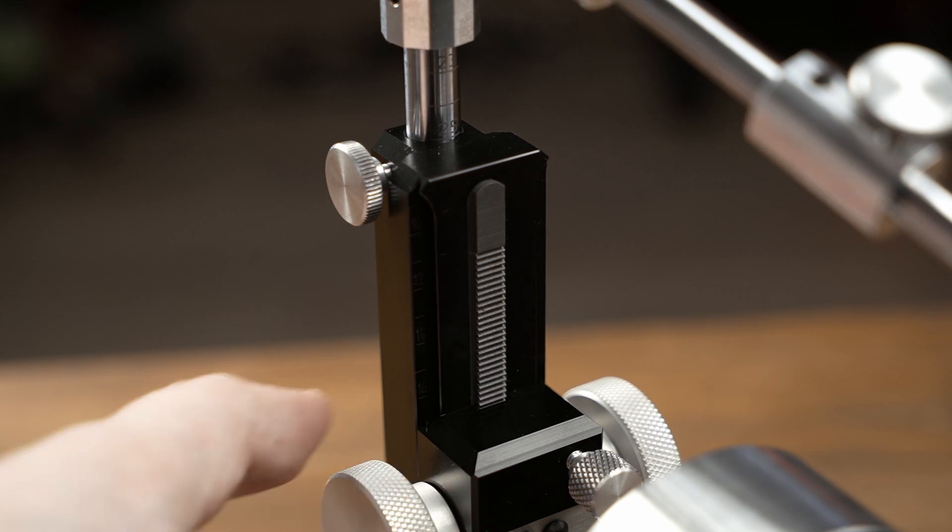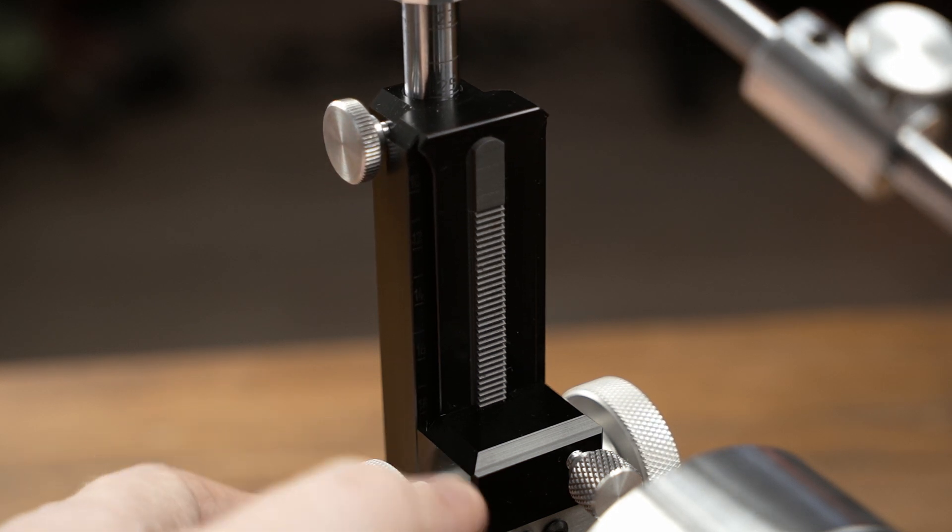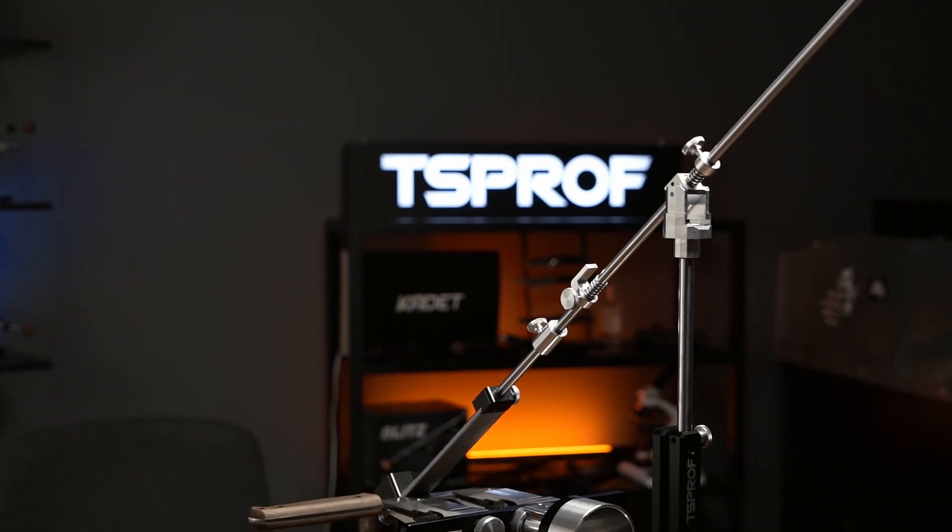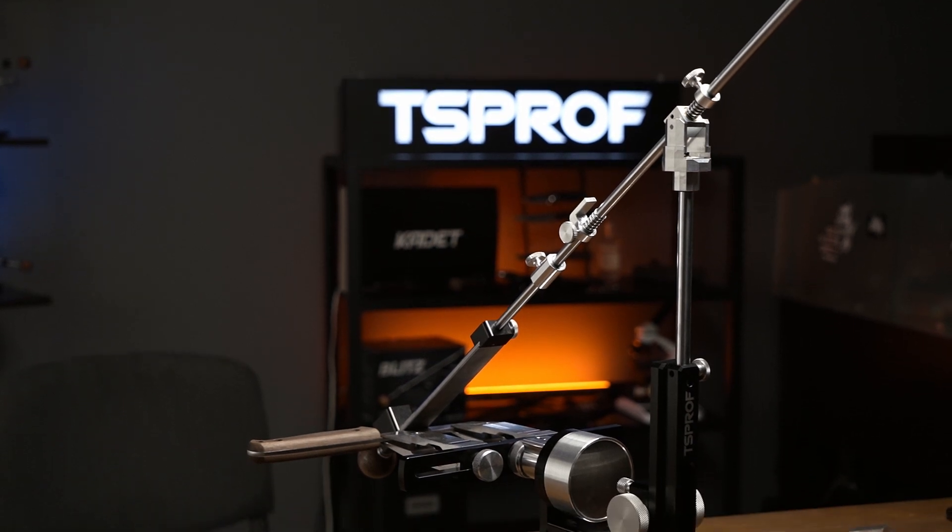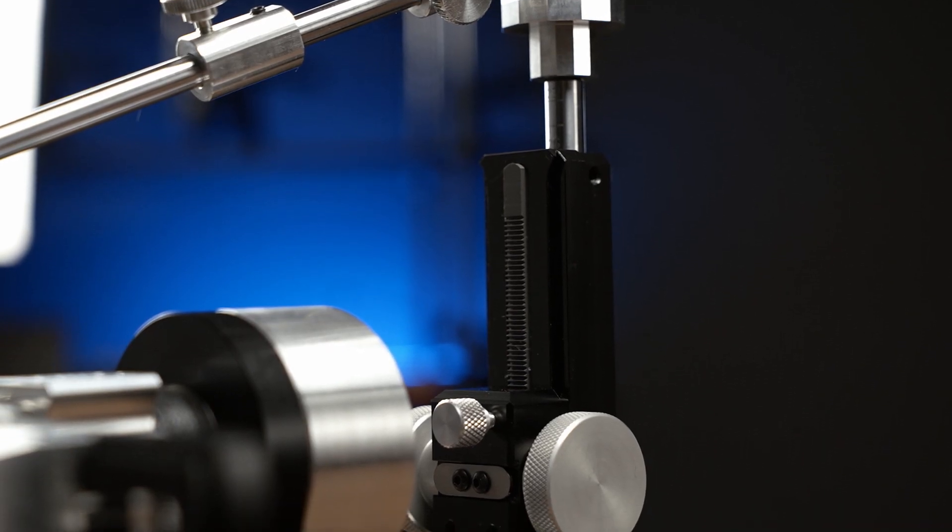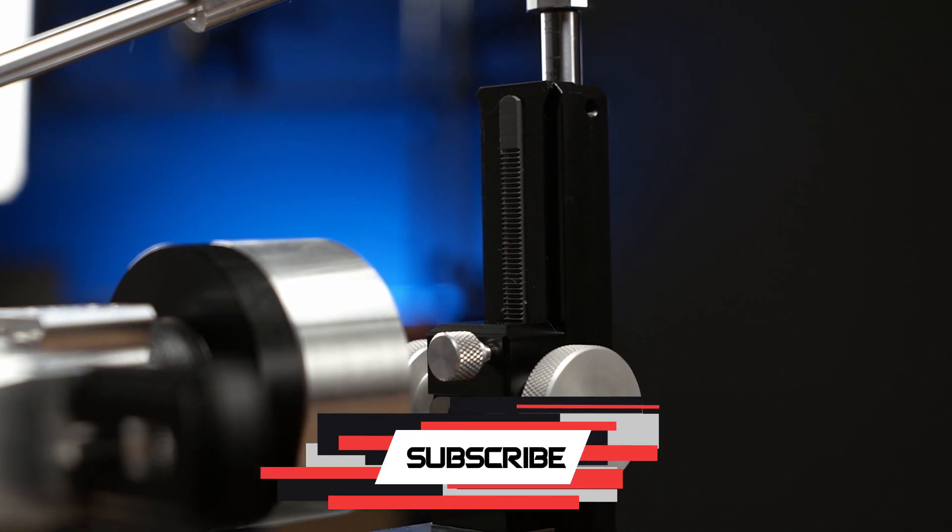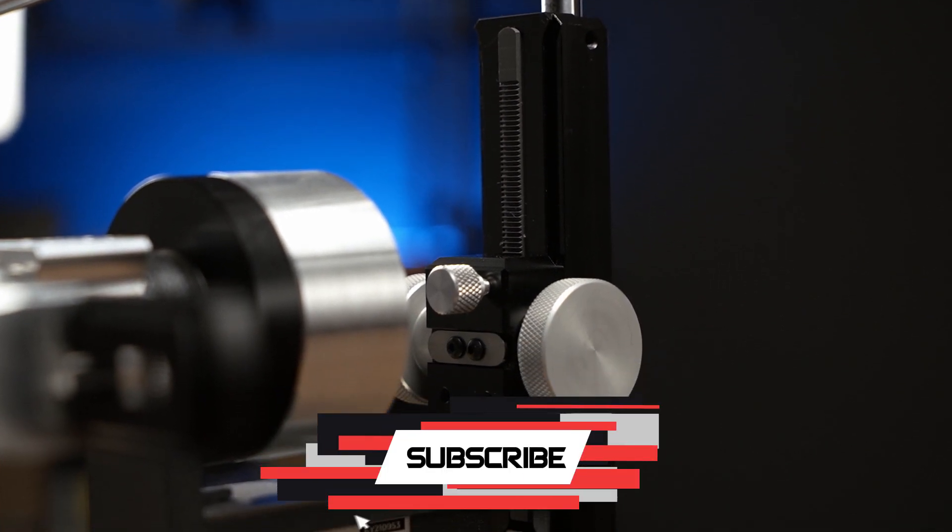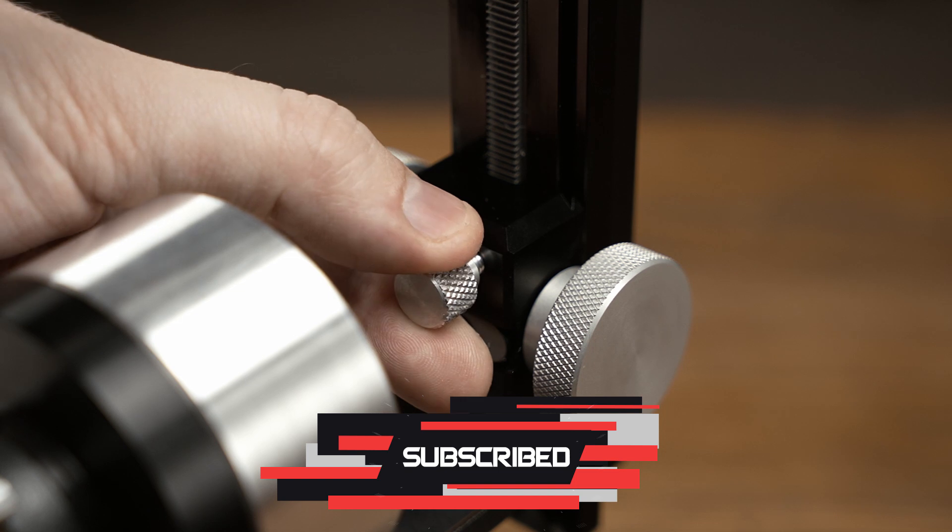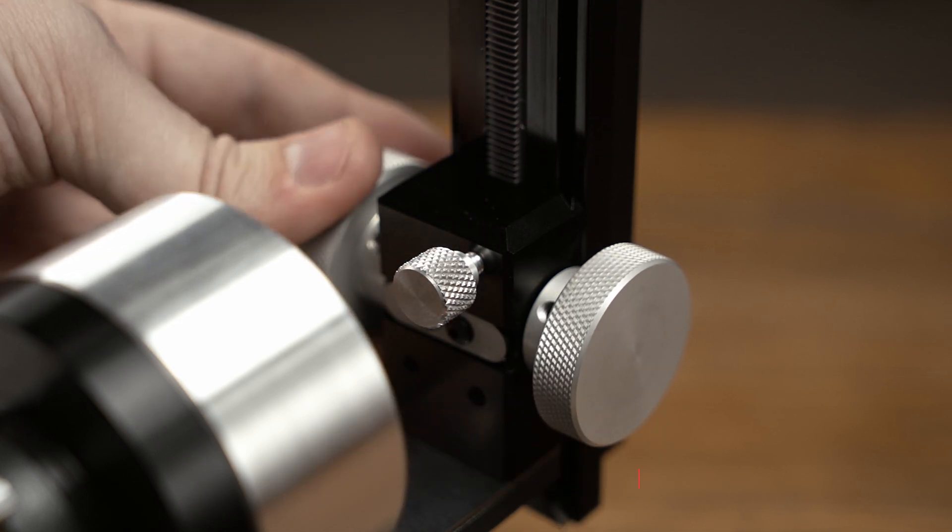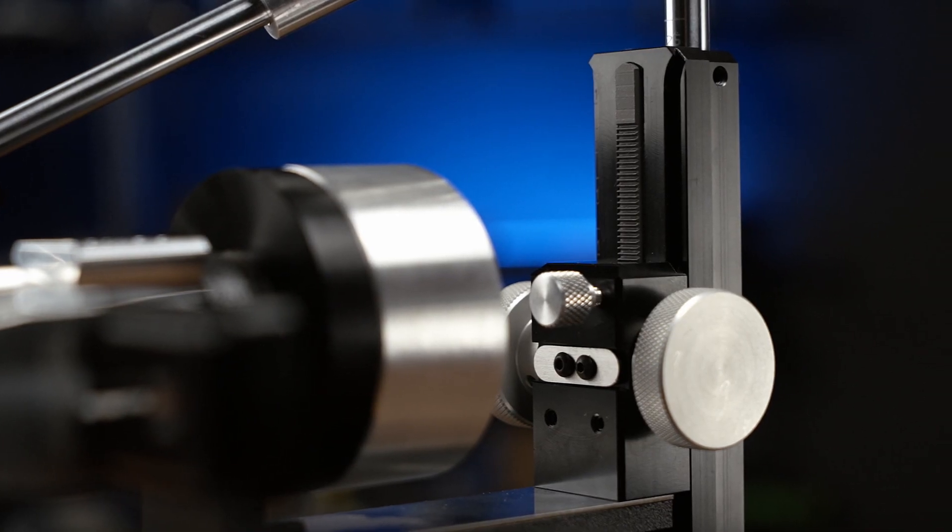Mount of the slider is also done with dovetail construction that avoids backlashes that could affect the sharpening results. The same steel rack serves for raising and lowering the slider. As for the lower part, it remains the same. It's made of aluminum and anodized.